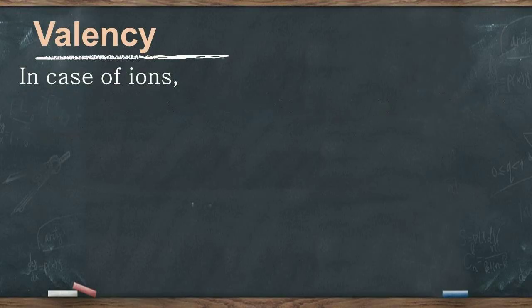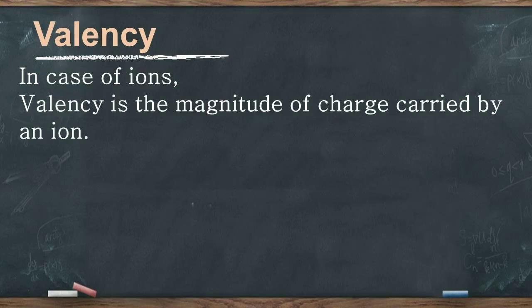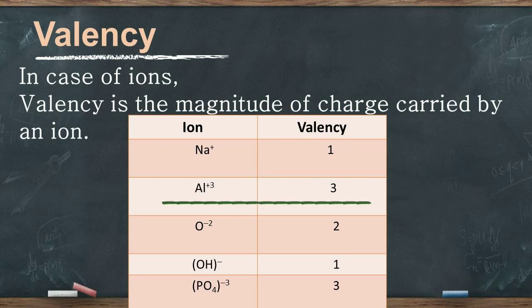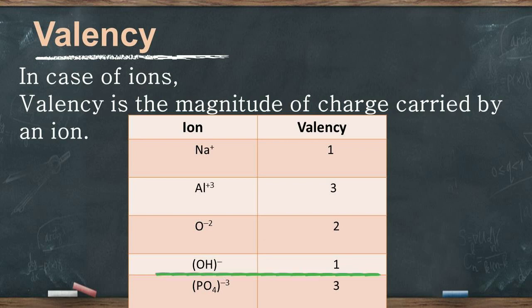In the case of ions, the valency is the magnitude of charge carried by the ion. For example, sodium ion has 1 positive charge, so its valency is 1. Aluminium ion carries 3 positive charges, so its valency is 3. Oxide ion carries 2 negative charges, so its valency is 2. Hydroxide ion has 1 negative charge, so its valency is 1. Phosphate ion carries 3 negative charges, so its valency is 3.